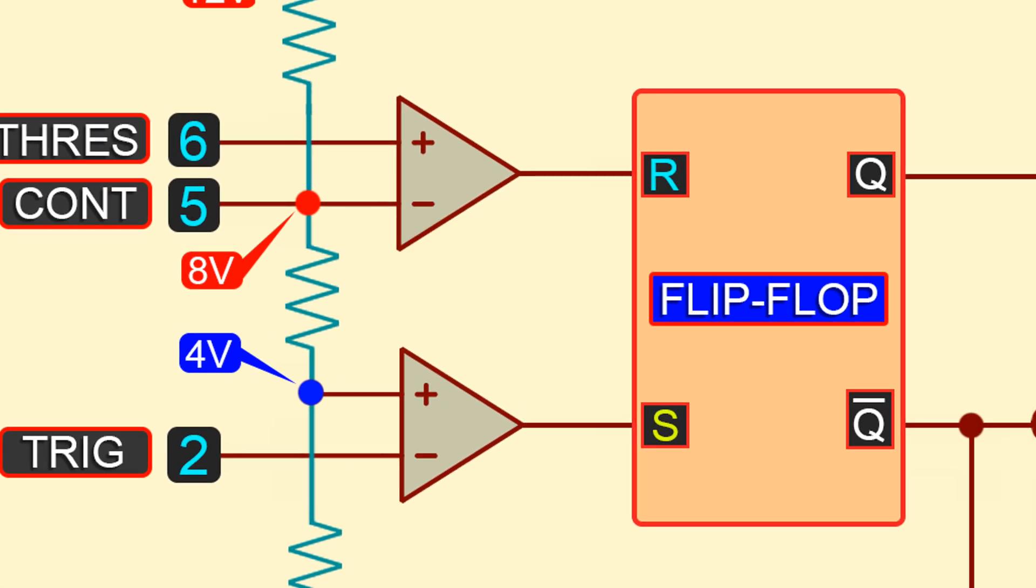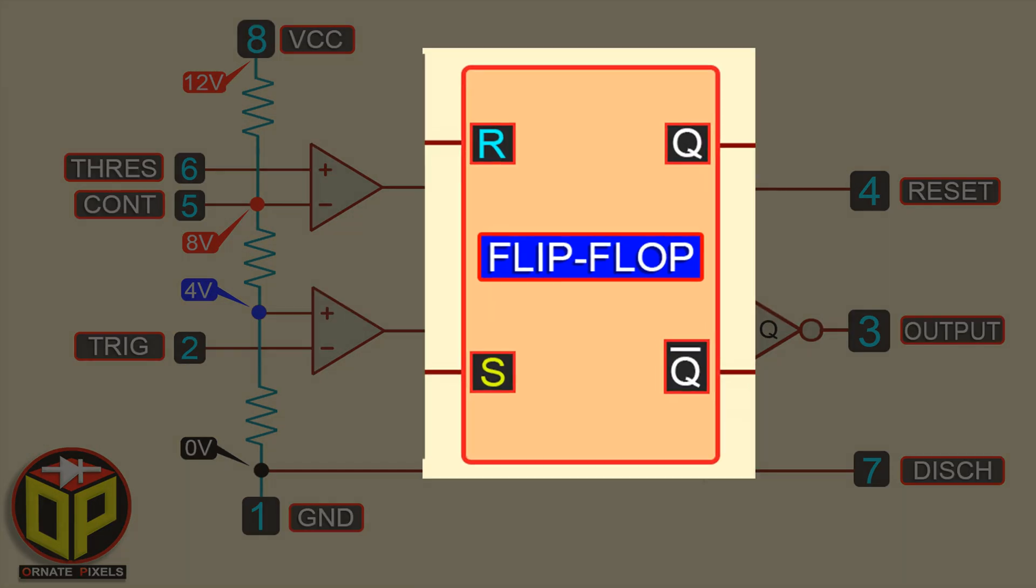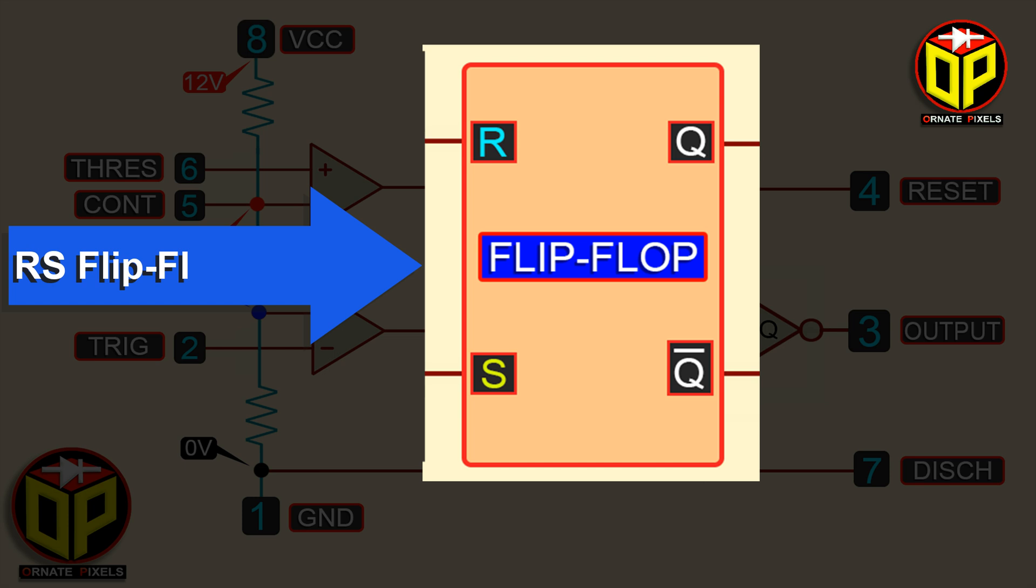So, we understand that the voltage is output from the comparators and comes to this section. The name of this section is RS flip-flop.